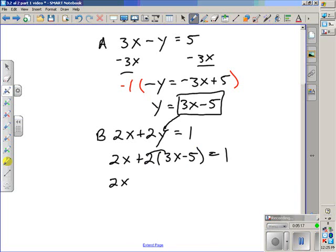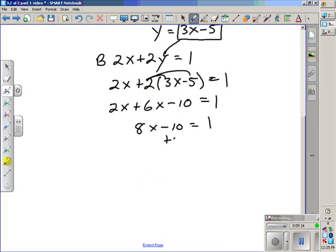First, we'll distribute this 2. 2 times 3x is 6x, and 2 times minus 5 is minus 10, and that's equal to 1. Combine these like terms: 2x and 6x gives 8x - 10 = 1. Add 10 to both sides, leaving 8x = 11. Divide both sides by 8. x = 11/8.